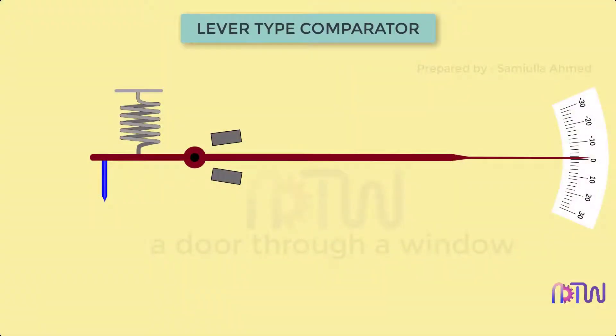A lever type comparator is a simple and important type of mechanical comparator. It employs a lever to obtain magnification of plunger movement. It consists of the following parts: pointer, scale, compression spring, plunger, and stoppers.